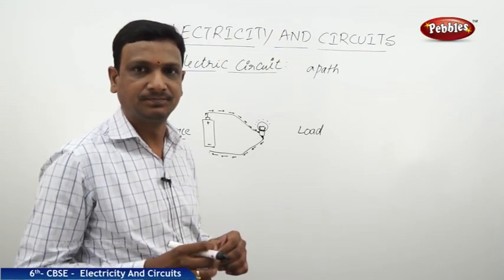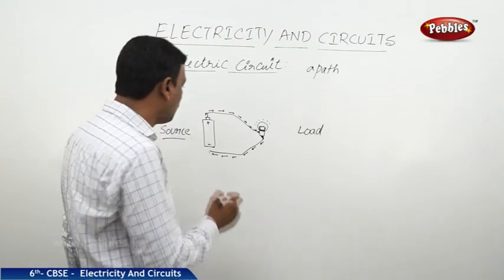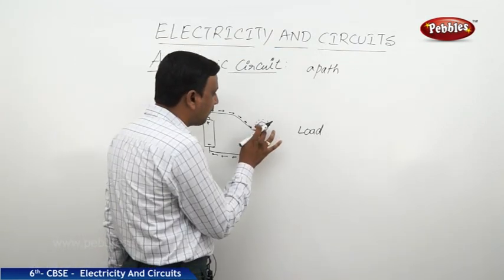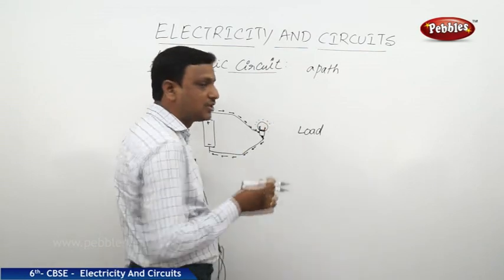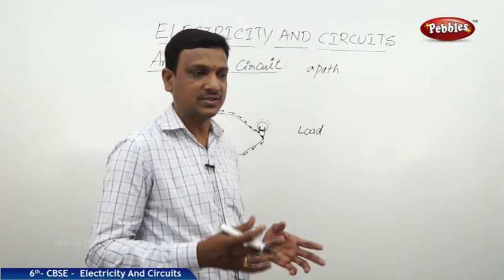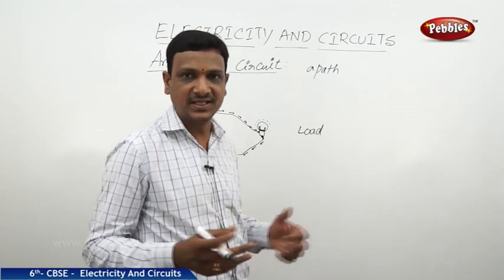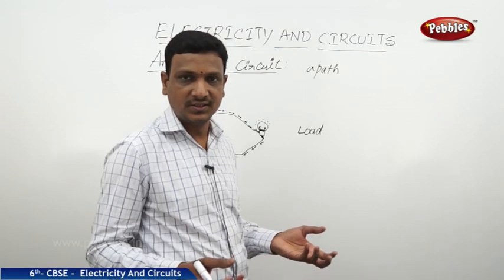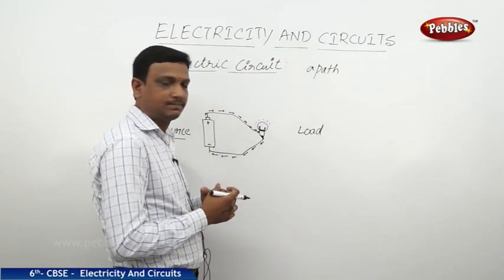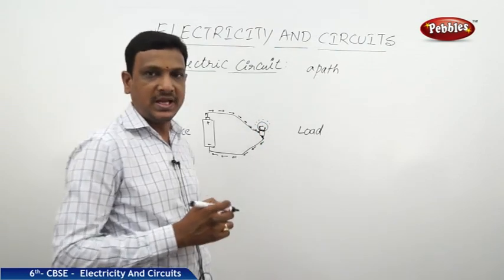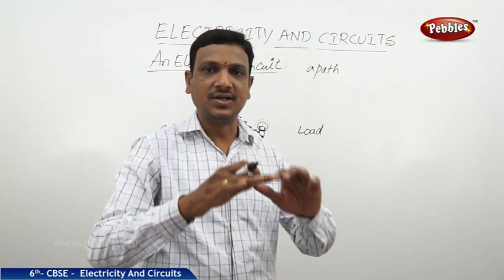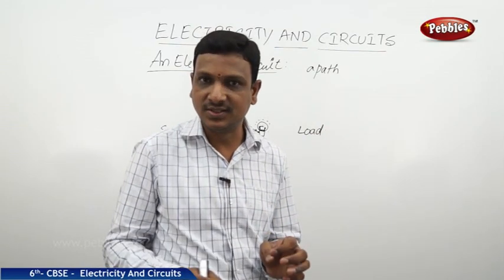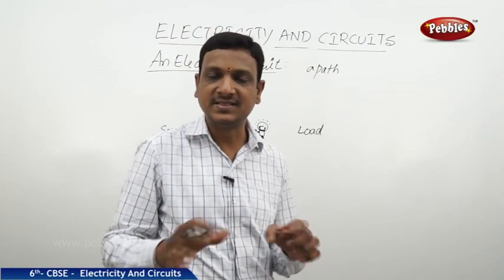Sometimes even though you've connected the circuit, the bulb is not glowing. The reason could be that the bulb is fused — the filament gets burnt due to high voltage or physical damage. If the filament is fused, there is no light. An important point: when a circuit is closed, only then does the flow of electric charges take place. Electric charges cannot travel unless the circuit is closed.